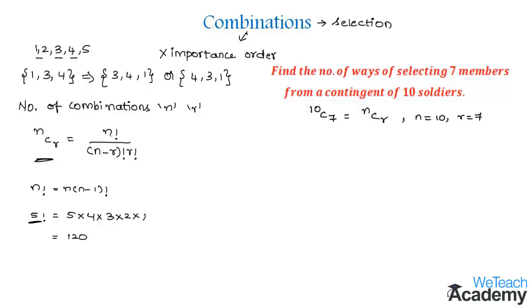Let us apply the formula. We get 10 factorial divided by 10 minus 7 factorial into 7 factorial. We can write 10 factorial as 10 into 9 into 8 into 7 factorial divided by 3 factorial. 3 factorial is 3 into 2 into 1 into 7 factorial.